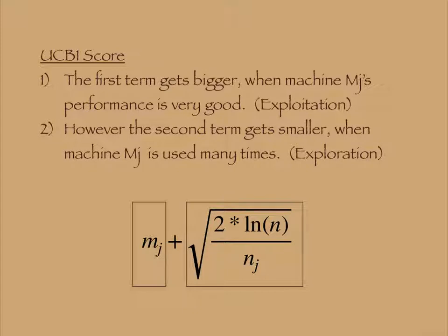The first term of UCB1 score gets bigger when Machine Mj's performance is very good. This is for exploitation of good machines.